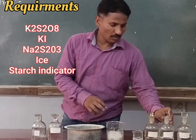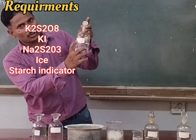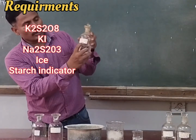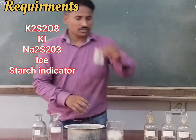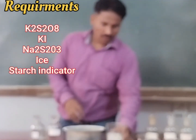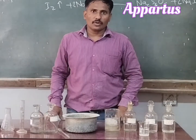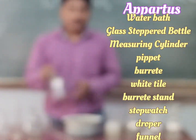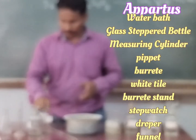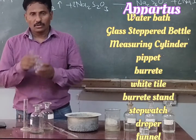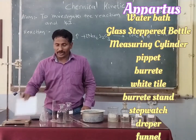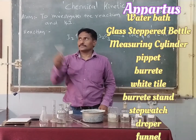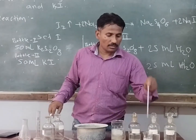The chemicals required are: potassium persulfate 0.005 normal, potassium iodide 0.05 normal, and starch indicator. The apparatus includes: ice, a water bath, pipette, glass stopper bottle, measuring cylinder, conical flask, burette, burette stand, white tile to observe the color change, funnel to fill the burette, stopwatch, and dropper.